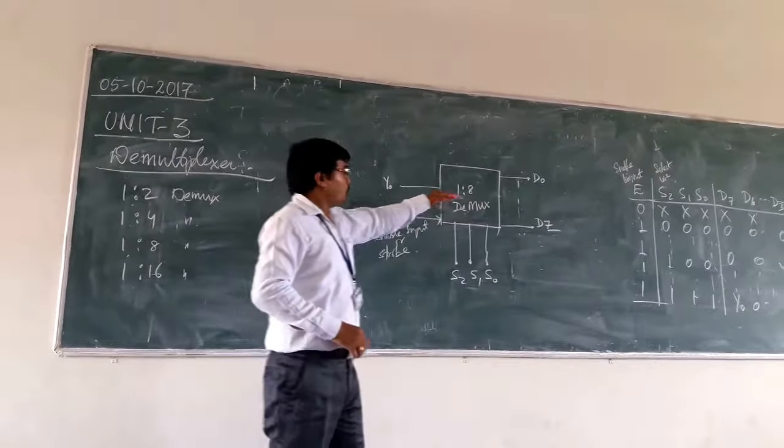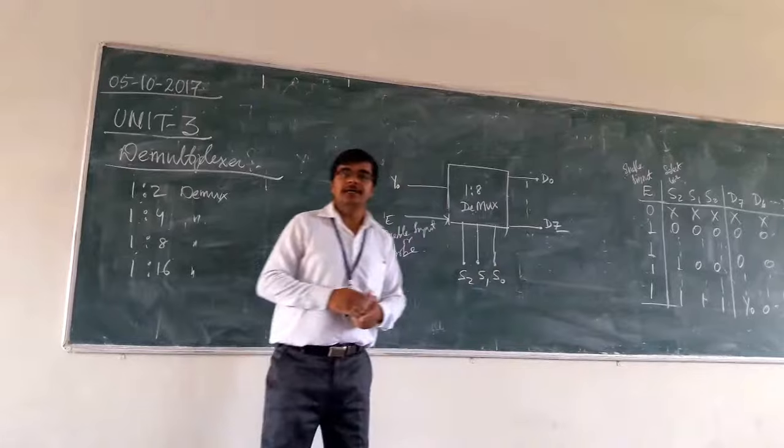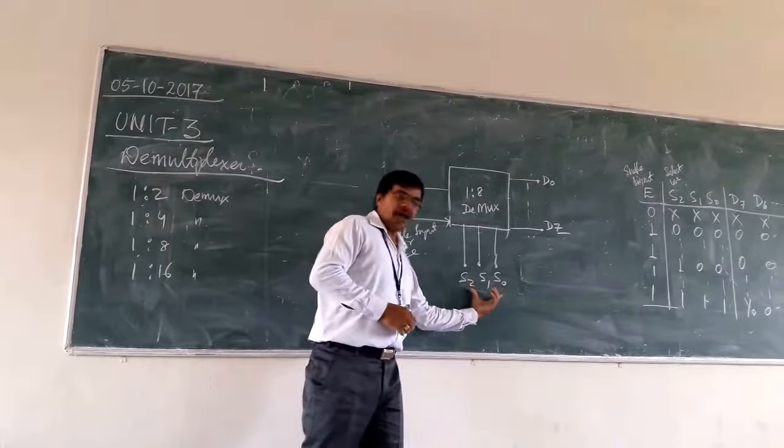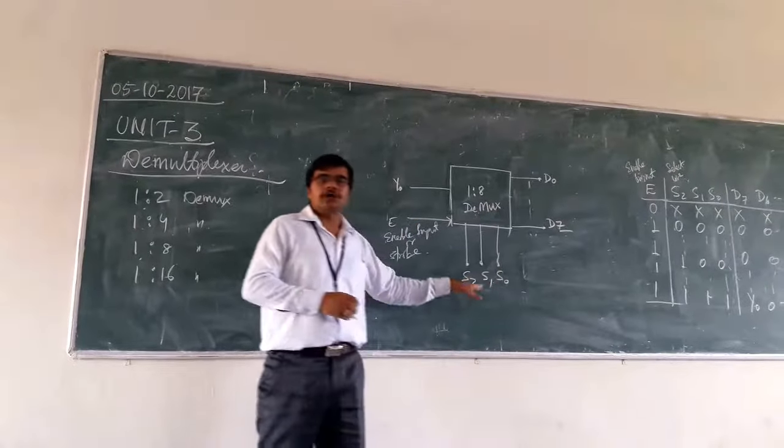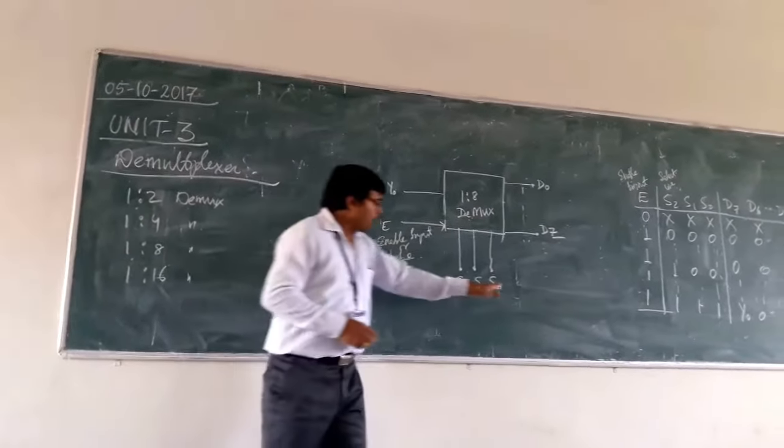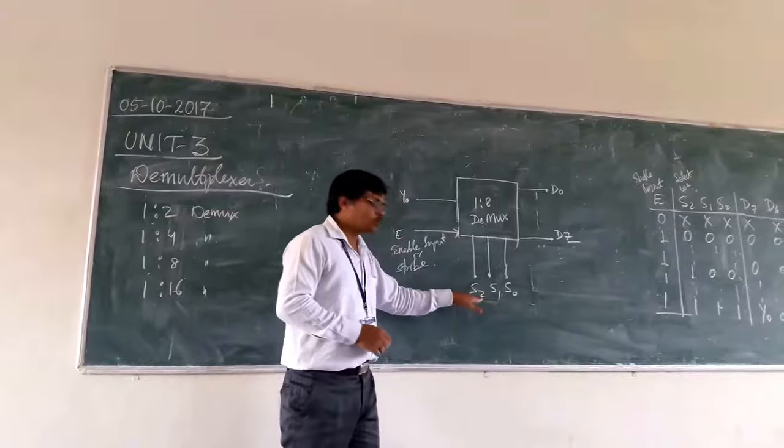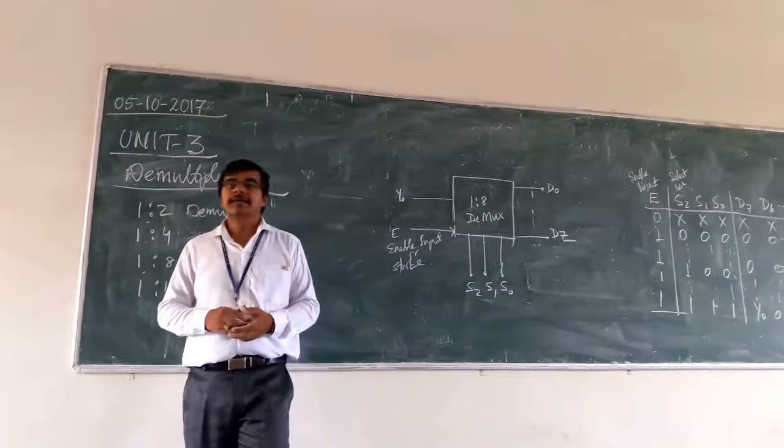As this is your 1 is to 8 demultiplexer, you need to have the select line. The select line that is required is your S0 to S2. So, S0, S1 and S2. These are the 3 select lines.